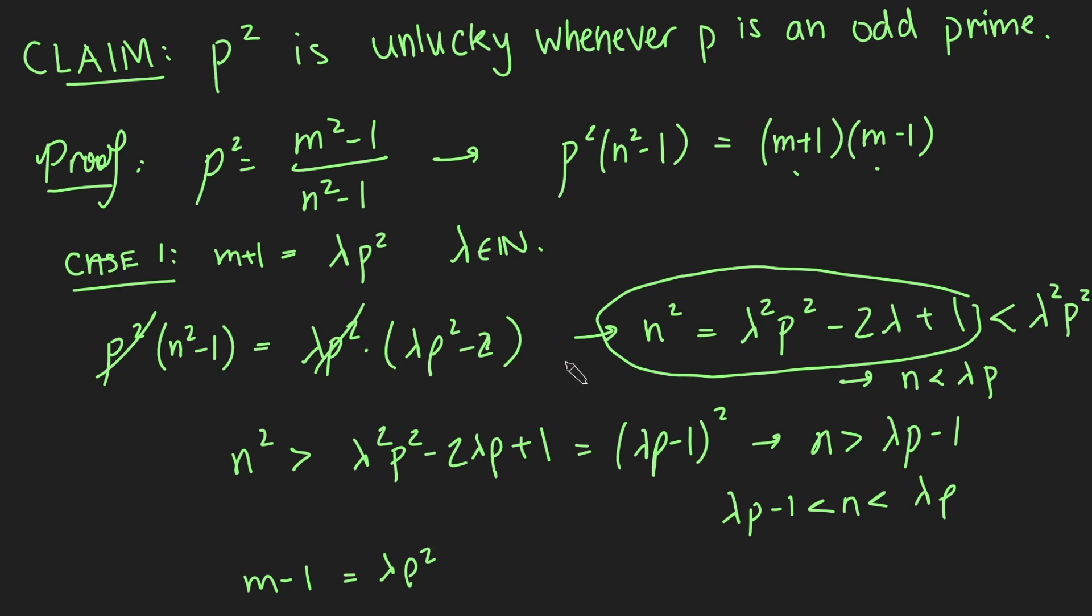And this proves our claim. So this means that p squared is unlucky whenever p is an odd prime because of contradiction. And since there are infinitely many odd primes, there are infinitely many unlucky numbers, and that solves our problem.